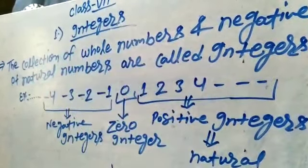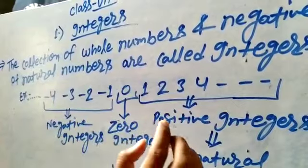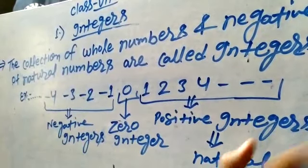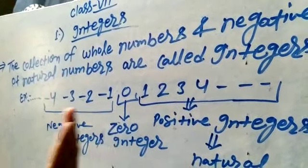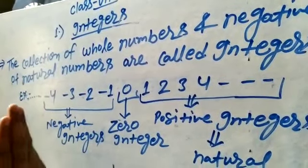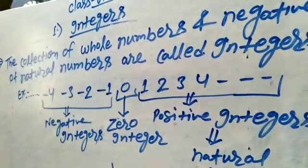Do you know what whole numbers are going to be? 0 starts from 0, 1, 2, 3, 4. Negative of natural numbers, minus 1, minus 2, minus 3, minus 4. These are all integers.